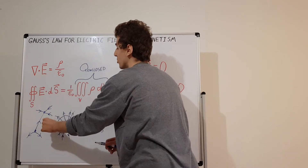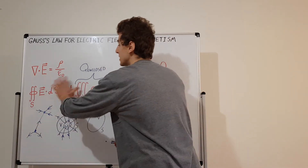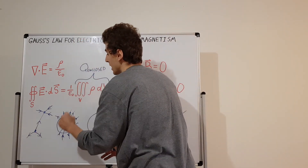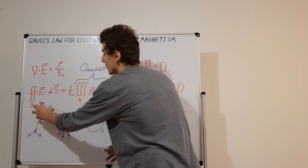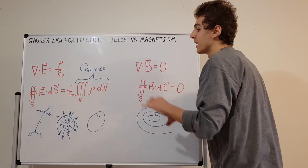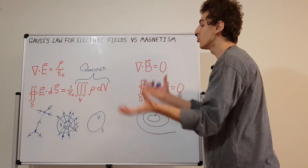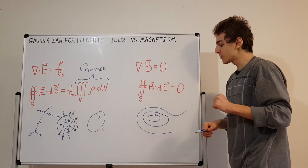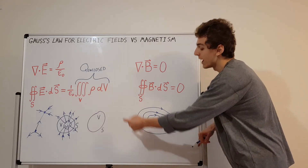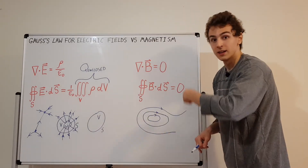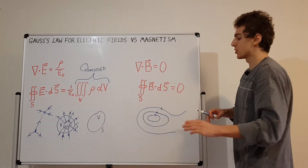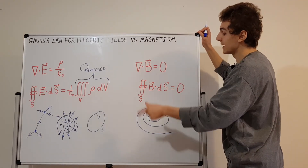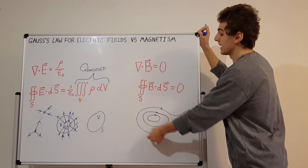Over a surface enclosing positive charges the flux is net positive; enclosing negative charges it's net negative. If all charges cancel out, there's no net flux through the enclosing surface. Magnetic fields, by contrast, never begin and never terminate — they either form loops or extend to infinity. Magnetic field lines cannot begin and cannot end.